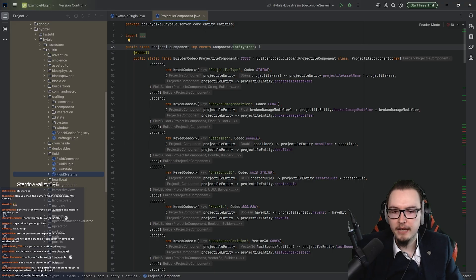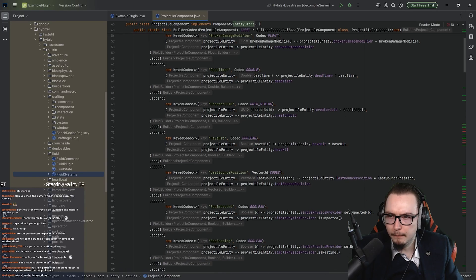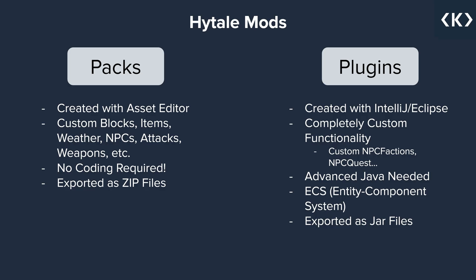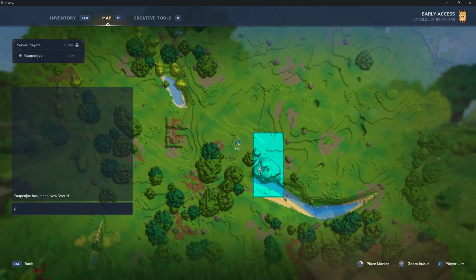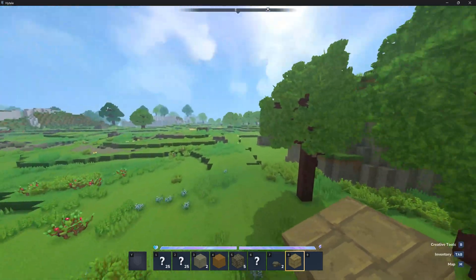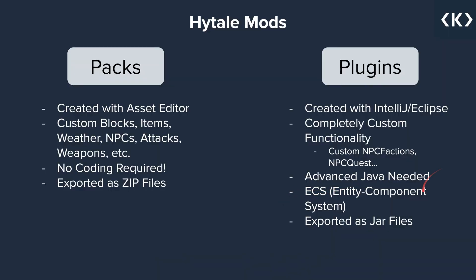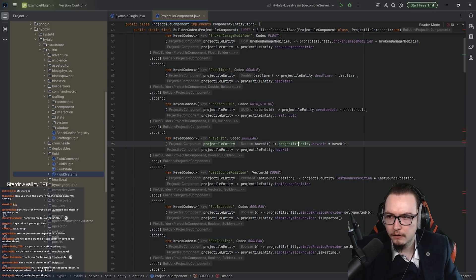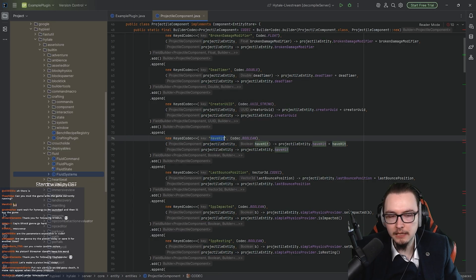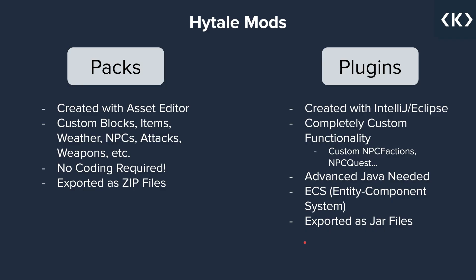Whereas plugins, those are created with IntelliJ, Eclipse, or any other IDE. These are for completely custom functionality, like NPC factions, NPC quests, chunk claiming, or anything like that — things that go beyond what is already inside the game. For this, advanced Java knowledge is needed. You are not going to be able to get through this with beginner or even intermediate Java knowledge. The entity component system that Hytale uses is very advanced, with lots of generics thrown around. Those are then exported as JAR files and can be uploaded to CurseForge, then downloaded and put into your mods folder.